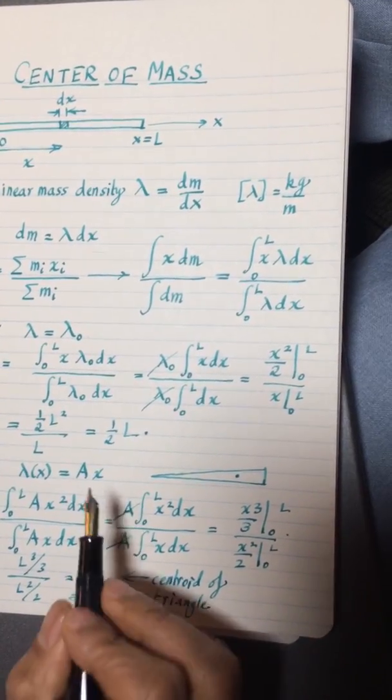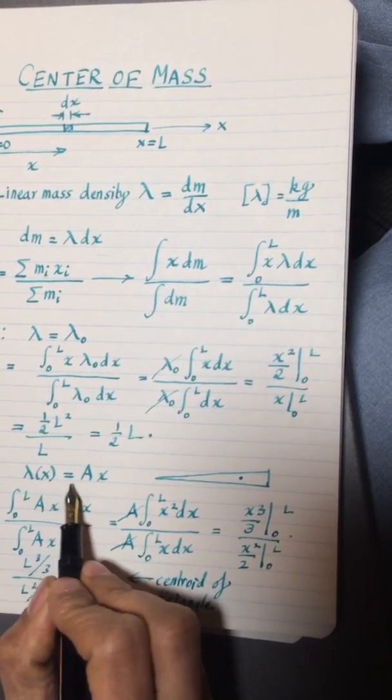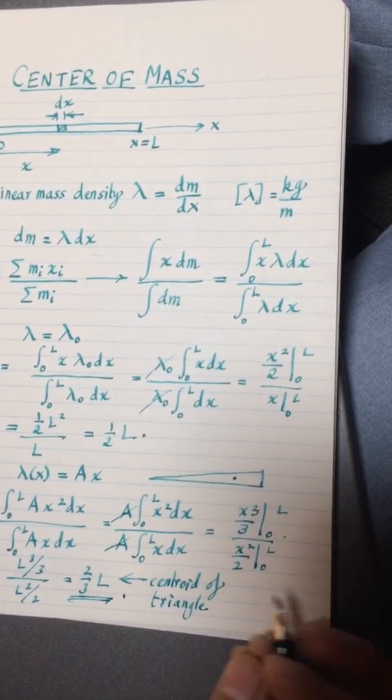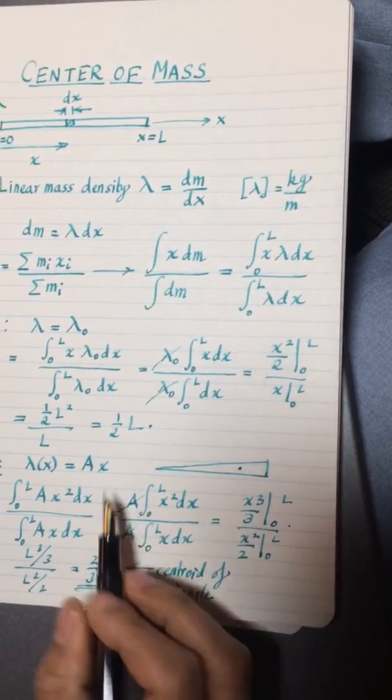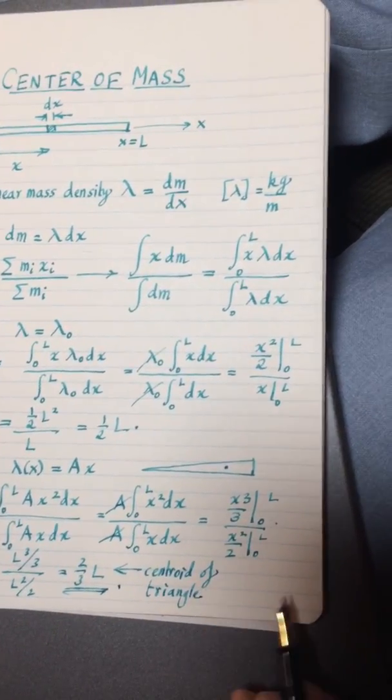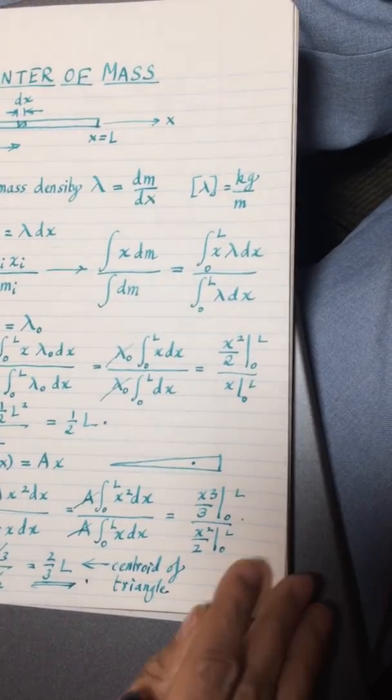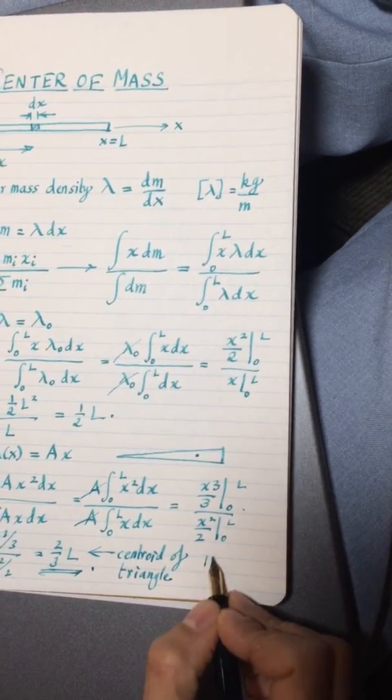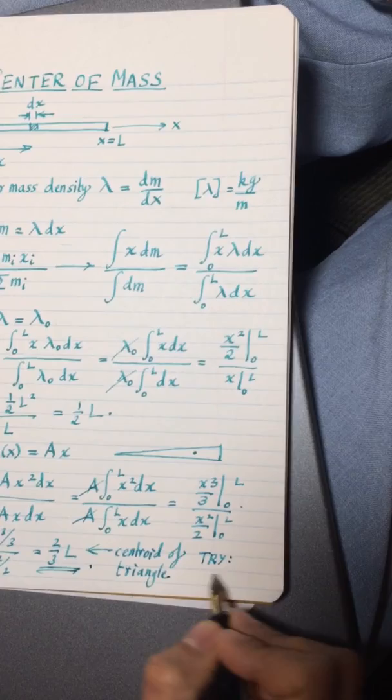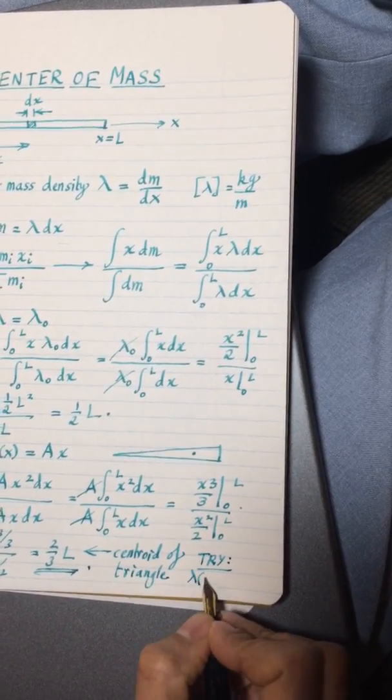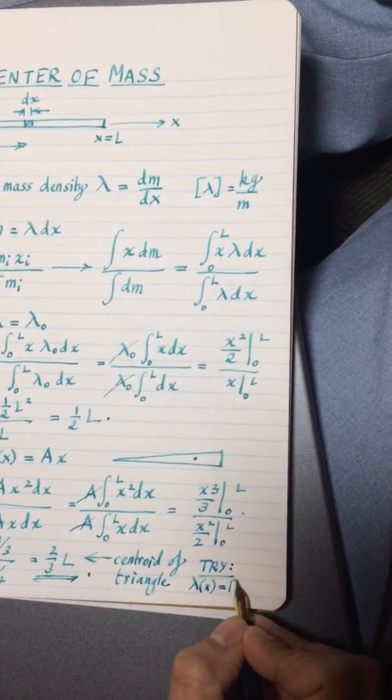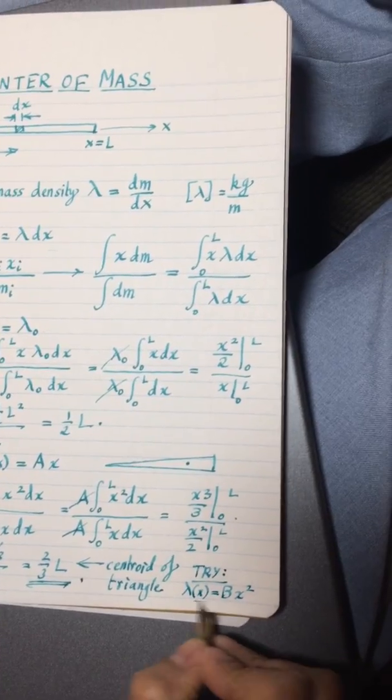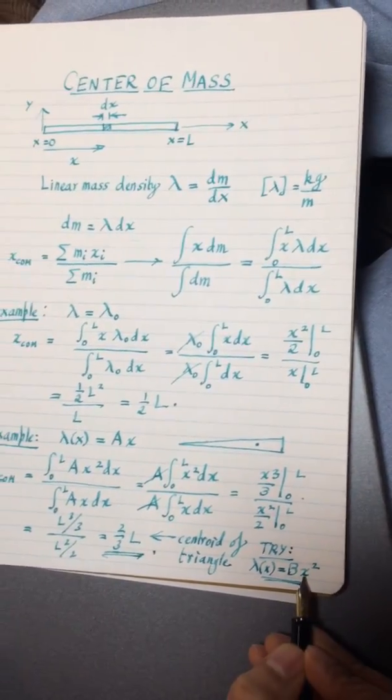If you for example try lambda of x equals A x squared, then as you have probably guessed that's gonna be the centroid of a cone. So I would like you to try and right here try lambda of x, let's call it B now, B x squared, and if you try this out and find its x com you will end up getting the centroid of a cone.